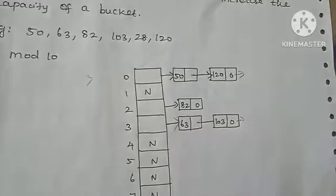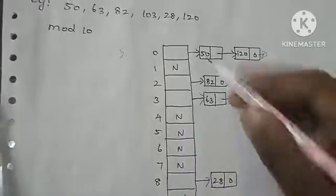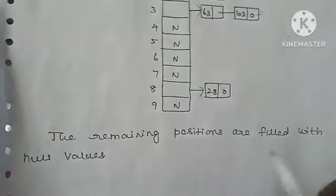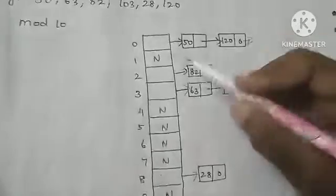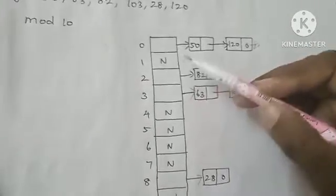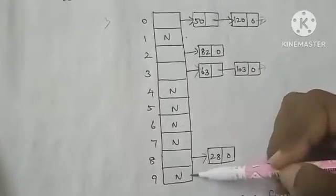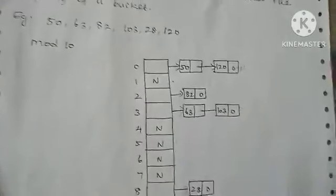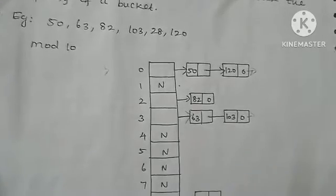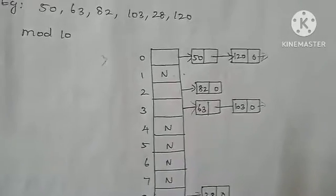When more values hash to the same position, the linked list at that position expands to hold more values. Remaining positions with no values are filled with null values, meaning no connection. This is overflow handling in data structures using open addressing and chaining methods.